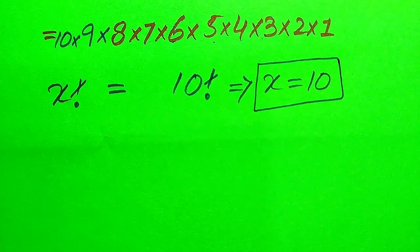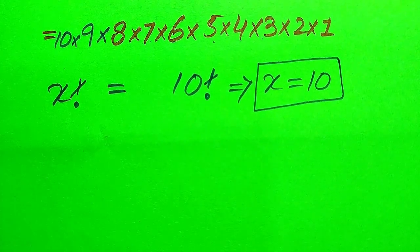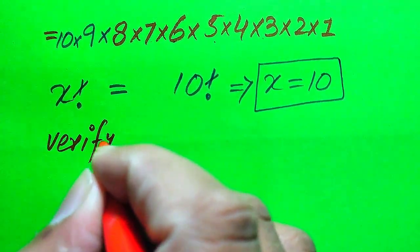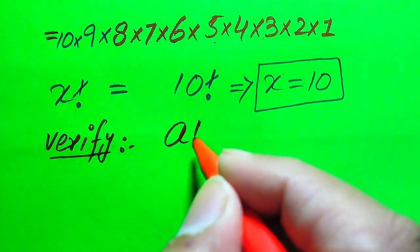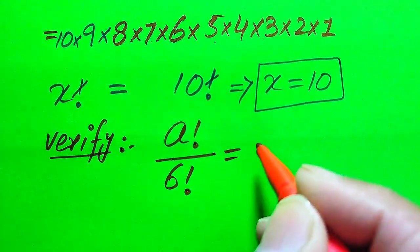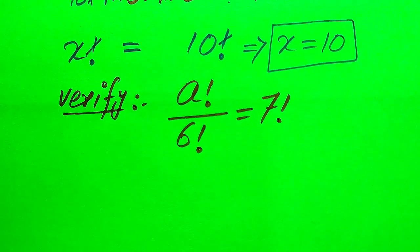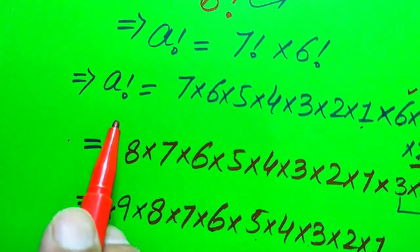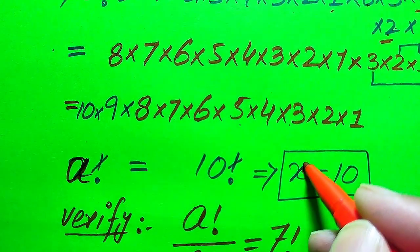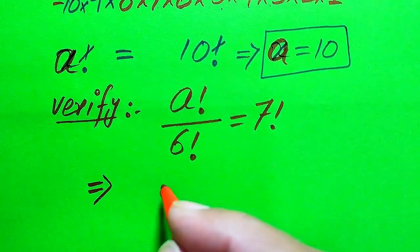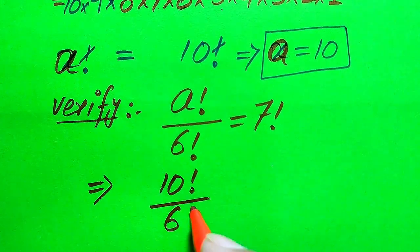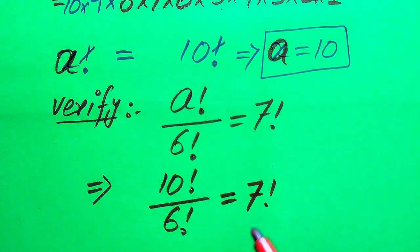This is our answer, but we need to verify that a = 10 satisfies the given question. For verification, we copy the original statement: a factorial divided by 6 factorial equals 7 factorial. Substituting a = 10, this becomes 10 factorial divided by 6 factorial equals 7 factorial.